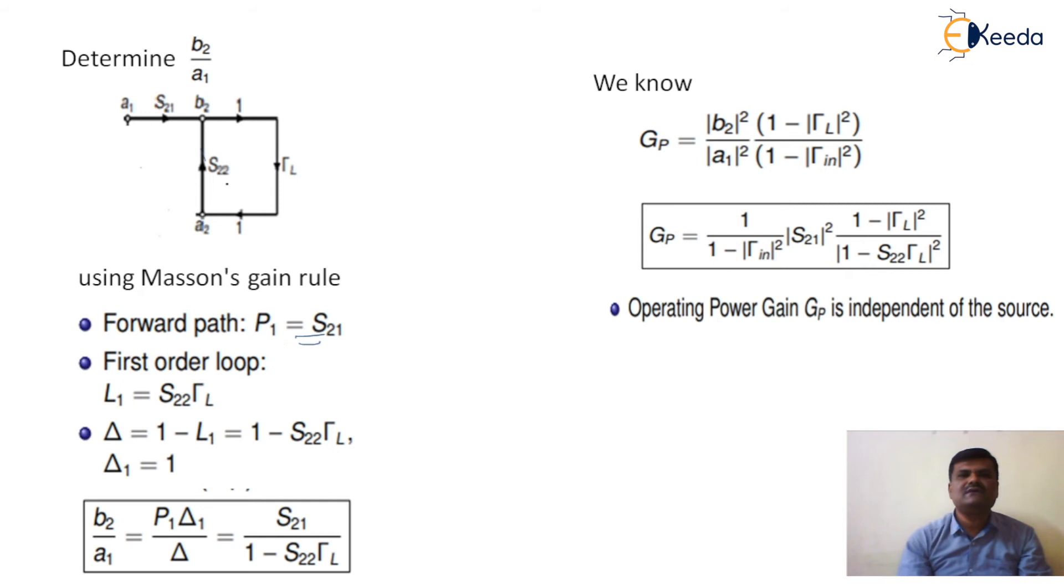Then first order loop. Only one loop is there, so its value is L1 equal to this loop S22 multiplied by gamma L, so L1 equal to S22 gamma L. Then second order loop is 0 because only one loop is there, so L2 equal to 0. Therefore, delta equal to 1 minus L1 equal to 1 minus S22 gamma L.